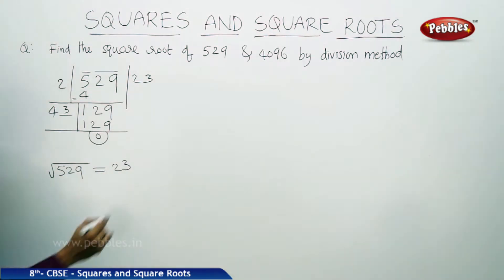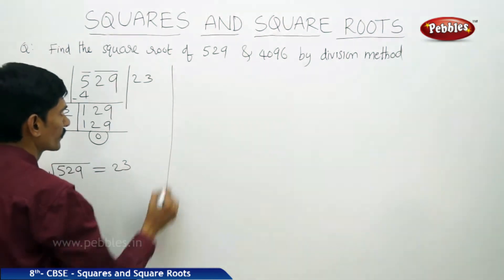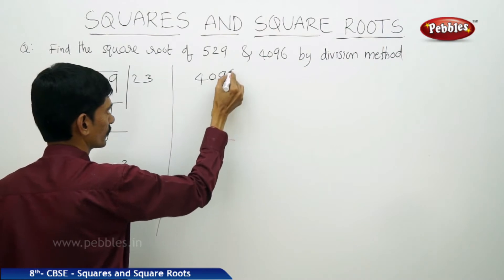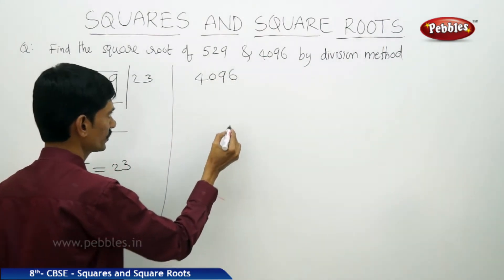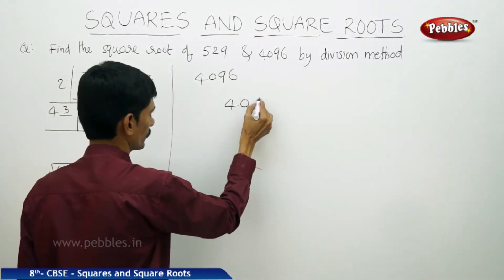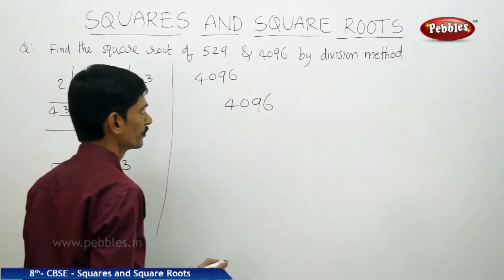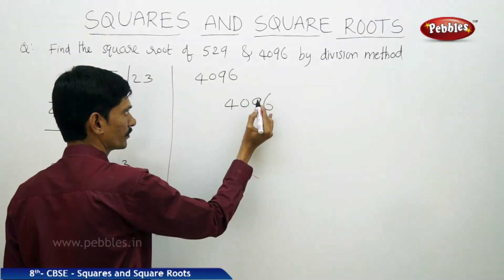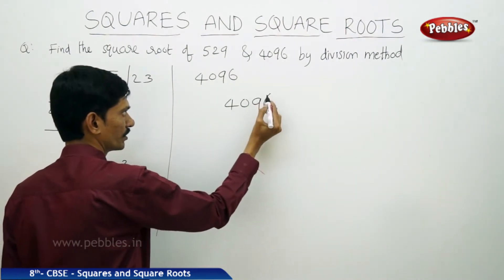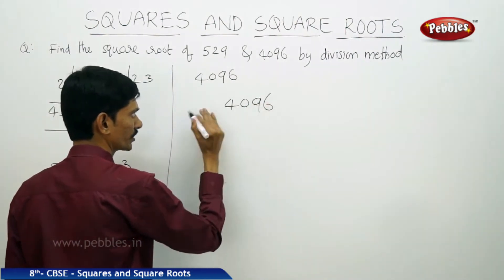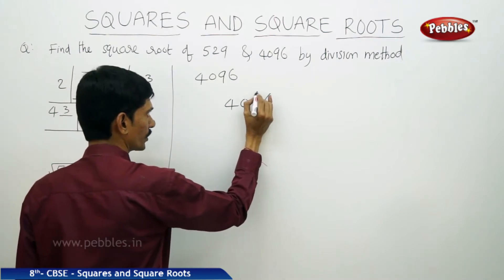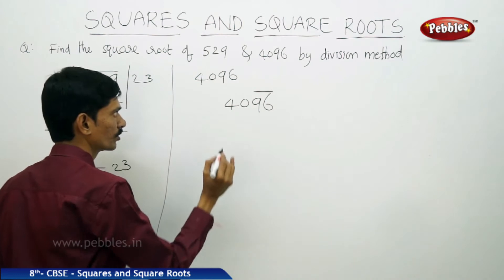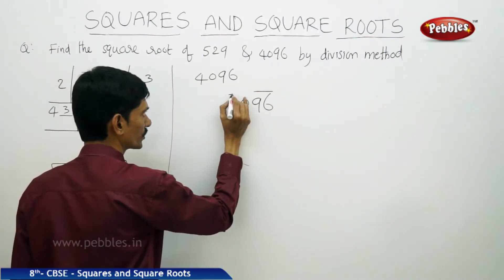Now let us take another example: 4096. First, place bar over every two digits from the unit's place. From right to left, for every two digits we use the bar. So over 96 and over 40.